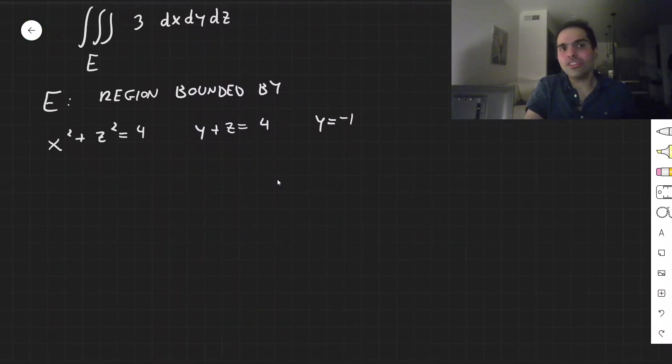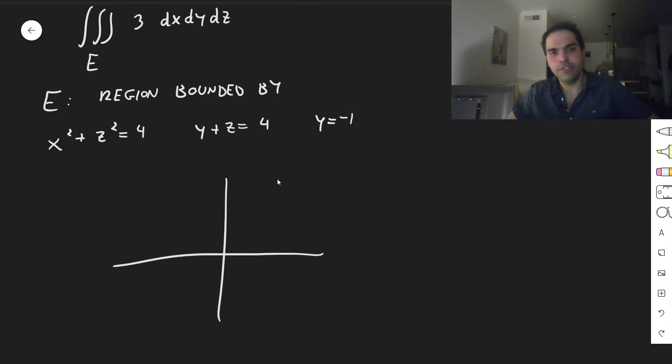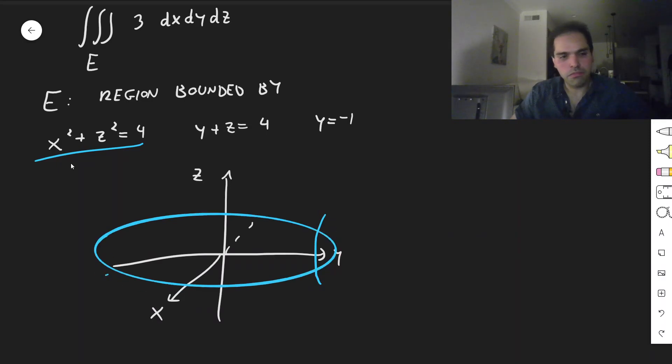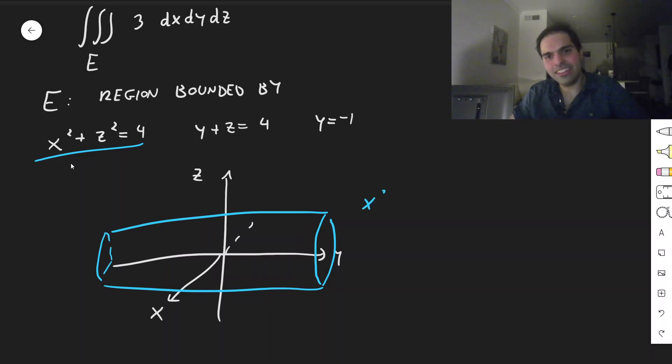So first of all, let's try to see what this looks like, and it does have a very interesting shape. So this is x, y, z. Now, x squared plus z squared equals 4. Notice there's no y, so in particular what this means is just a cylinder in the y direction, kind of like this. Not quite, not an ellipse, but it's a cylinder.